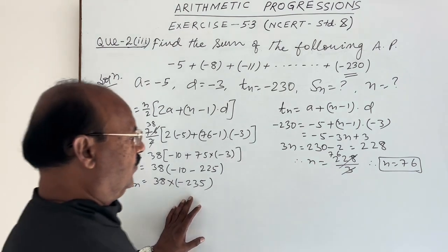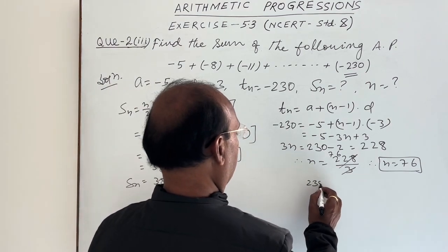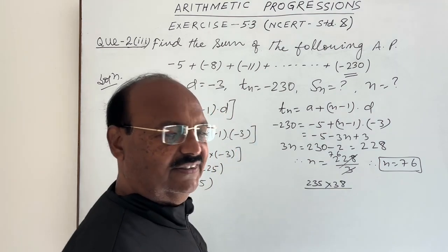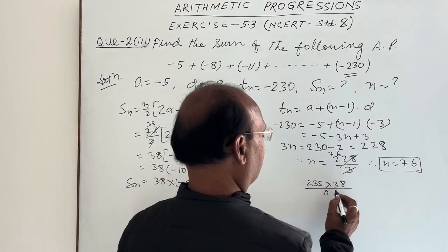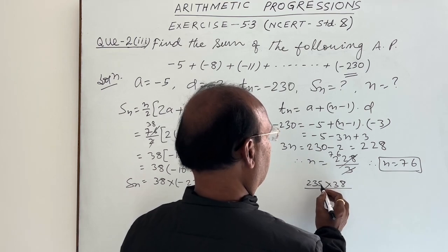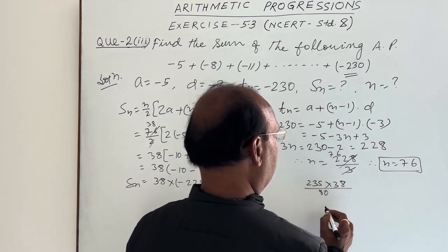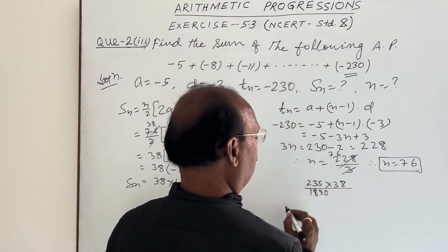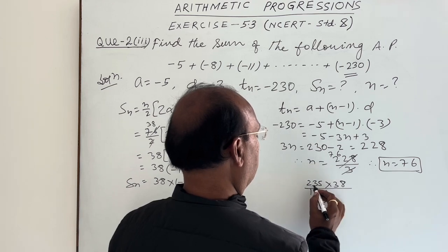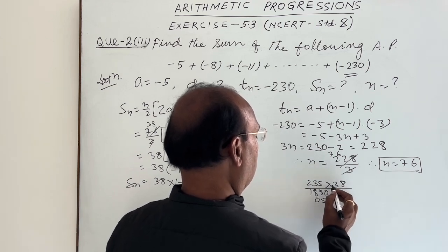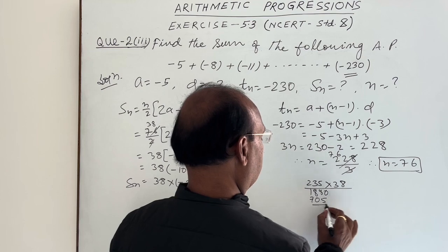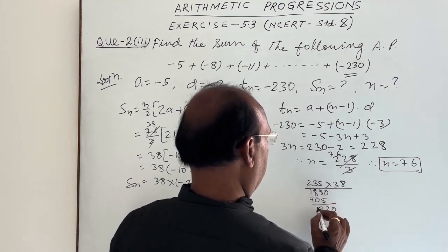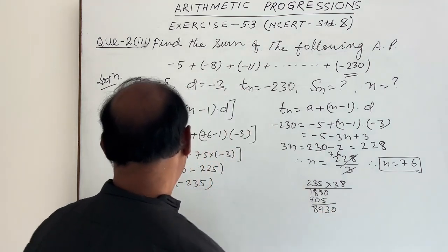So let us multiply 235 and 38. It is very simple, do yourself. 8 fives are 40, 4, 8 threes are 24, and 4, 28, 2, 8 twos are 16, 2, 18. 3 fives are 15, 3 threes are 9, and 1, 10. 3 twos are 6, and 1, 7.